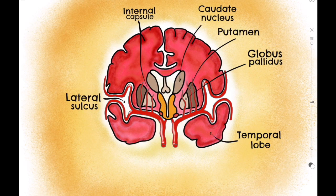The internal capsule is a white matter tract structure that contains nerve fiber bundles passing through it. The main structures surrounding the internal capsule are the basal ganglia. This is a group of gray matter nuclei, sometimes referred to as the basal nuclei, that have various connections with the midbrain and the diencephalon. Their main function is related to motor output.